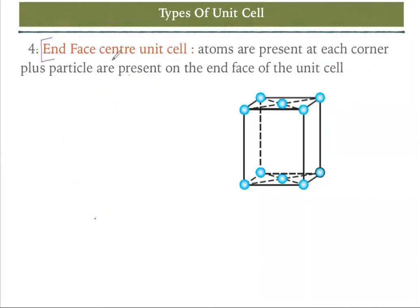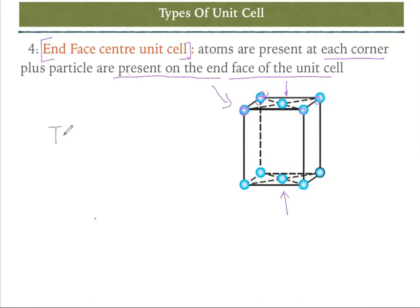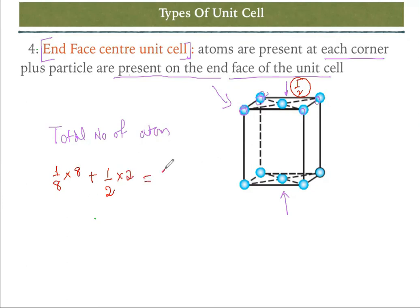The next type of unit cell is the end-centered or end-face-centered unit cell. Atoms are present at the corners, and particles are also present on the end faces. There are eight corner atoms, plus two atoms on the end faces — one on top and one on the bottom. Calculating: eight corners times one-eighth gives one, plus two end-face atoms times one-half gives one, for a total of two atoms in the end-centered unit cell.